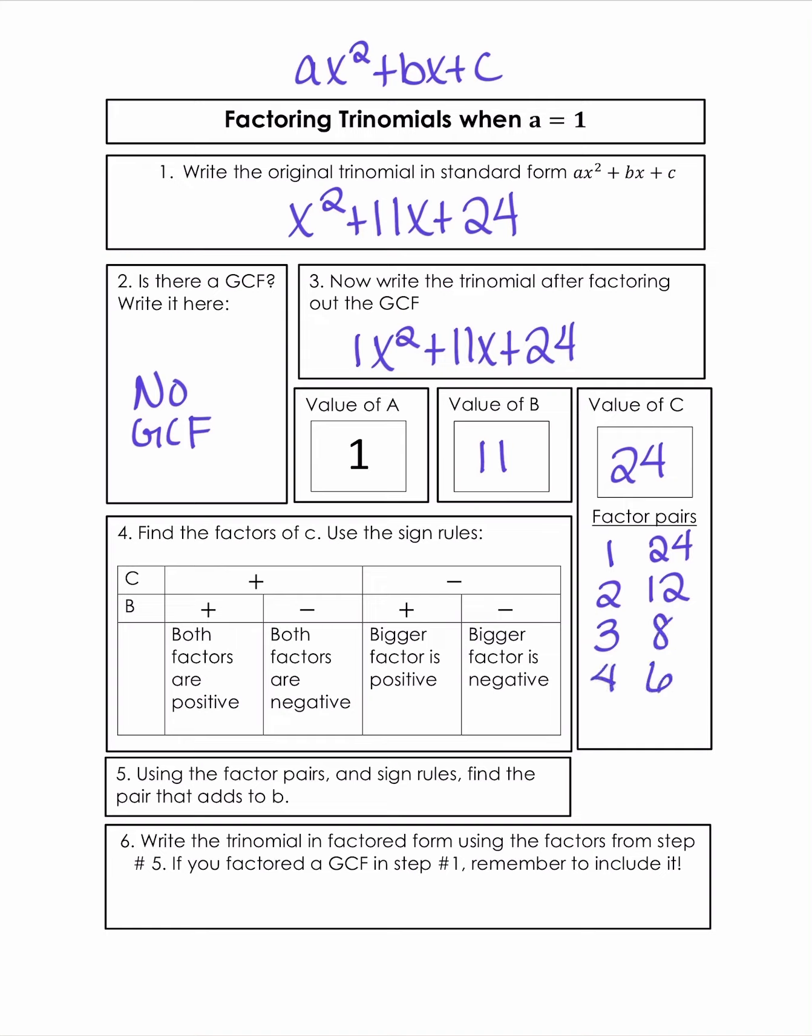Now we need to figure out the signs of the factors. So in this case, we have the value of C that's positive, and then a value of B that's also positive. So both our factors are going to be positive, so we don't need to change any signs.